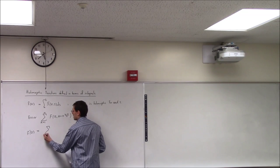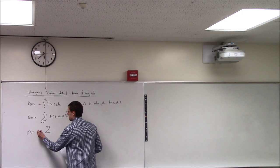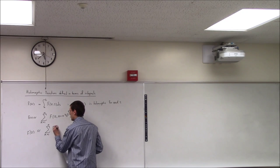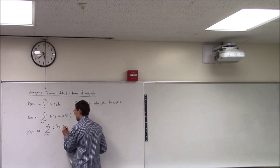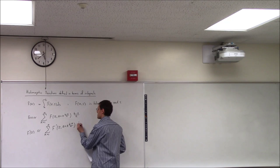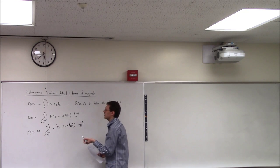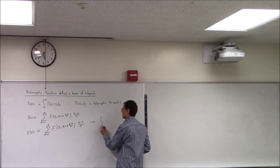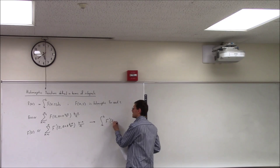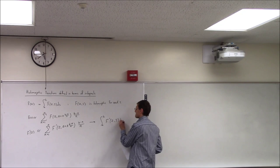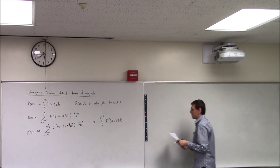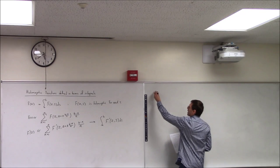You would expect f prime of z to be approximately the summation k=1 to n of F prime of z, a plus k(b minus a)/n, times (b minus a)/n, which will then go into the integral from a to b of F prime of z, s ds. So we expect this to happen. To prove it formally, we describe the following theorem.